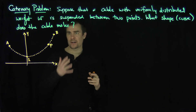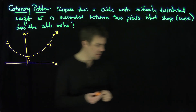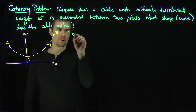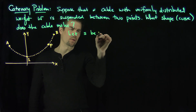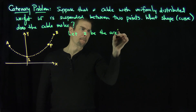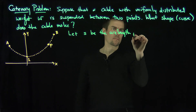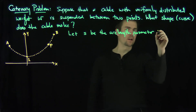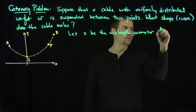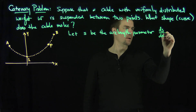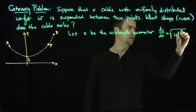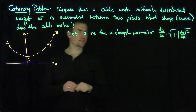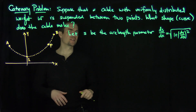Now I'm going to write down a couple of different parameters we'll need in the problem. If point P is (x, y), then we're going to let s be the arc length parameter. We know the arc length parameter is defined by its derivative, namely that ds/dx is just going to be the square root of 1 plus (dy/dx) squared. That's something we learned in Calc 2.